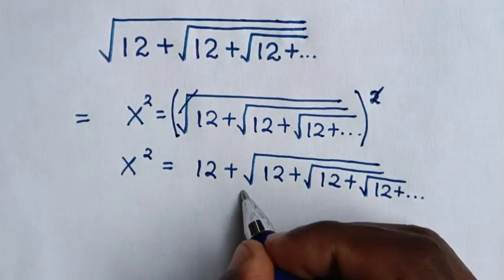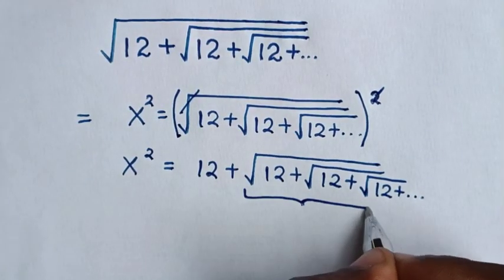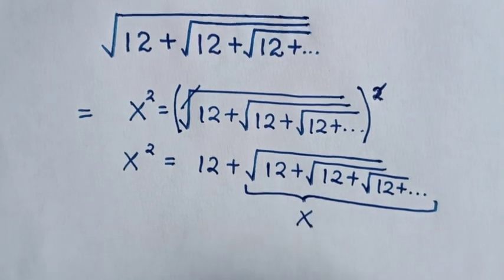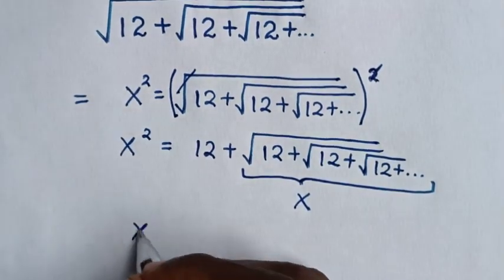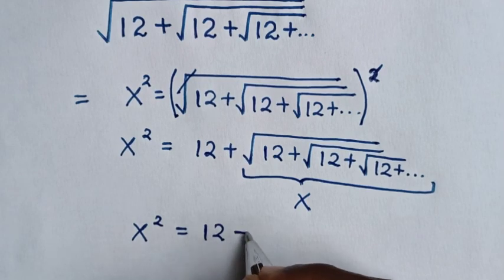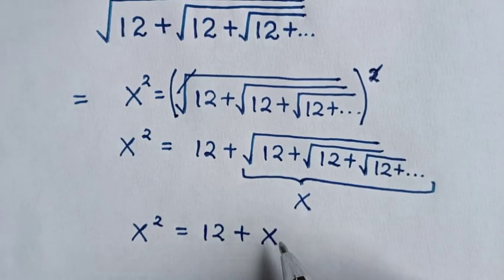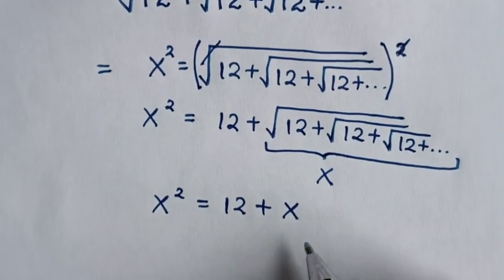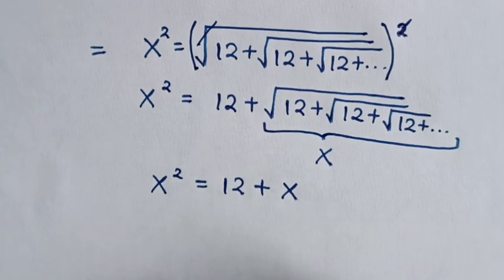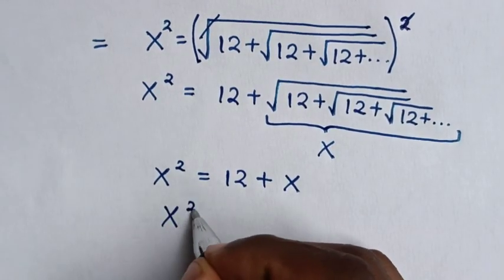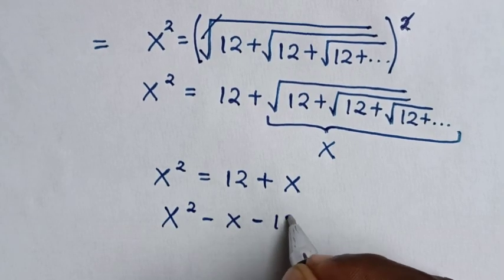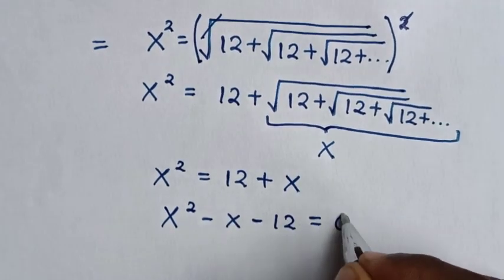As we let this radical as x, we will have the equation x squared is equal to 12 plus x. Then we take 12 plus x to the left side, so it will be x squared minus x minus 12 is equal to 0.